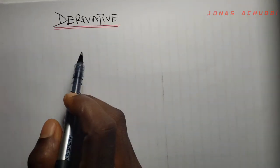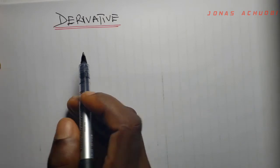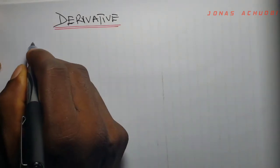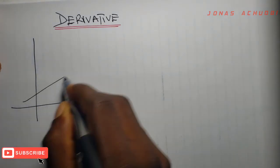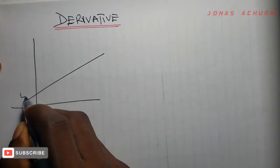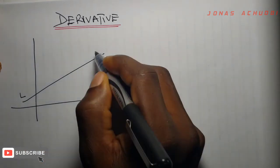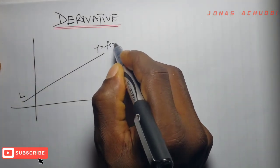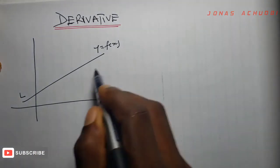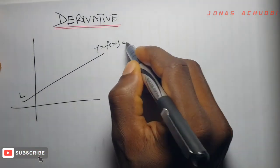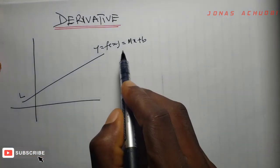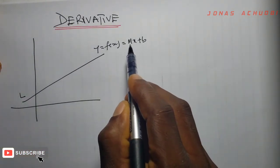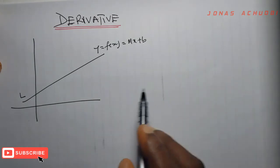Derivative. To understand what a derivative is, let us consider the following situation. On a rectangular plane, consider a line, say line L. This line has an equation y equal to f of x, and since L is a straight line, it has equation mx plus b. This is what we call the slope-intercept equation for a straight line.